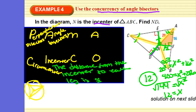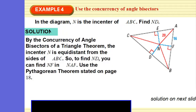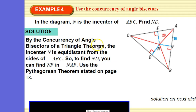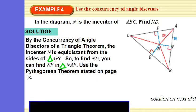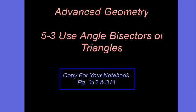The concurrency of the angle bisectors of a triangle theorem: the in-center N is equidistant to the sides of triangle ABC. To find ND, you find NF in triangle NAF using the Pythagorean theorem, and you get 12. Or, as mentioned, it is a multiple of a 3-4-5 triangle. Is everyone clear on using angle bisectors of triangles?